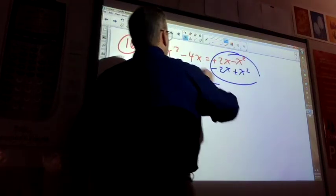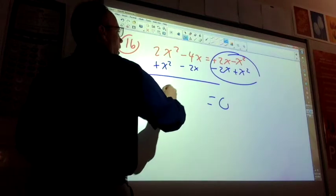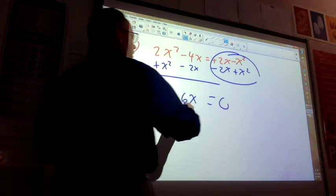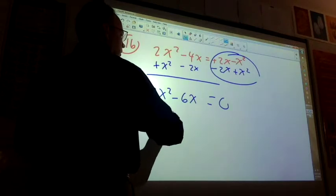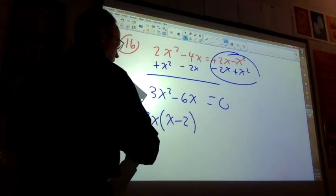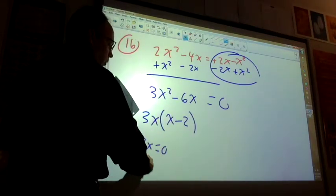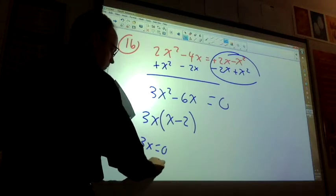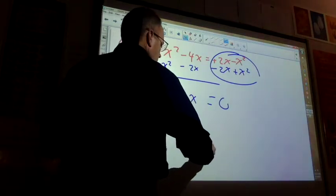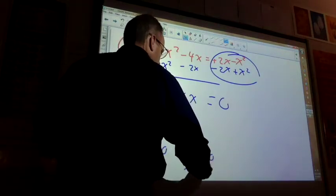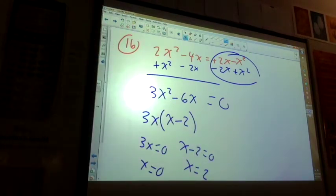That's what? 3x squared minus 6x. The greatest common factor is the 3x. I get 3x equals 0, so x equals 0. And then x minus 2 equals 0, so x equals 2. So those are the two solutions.